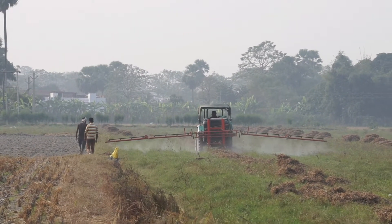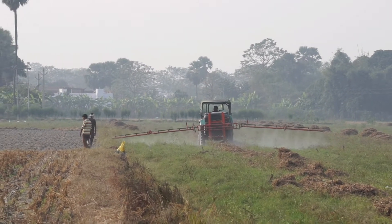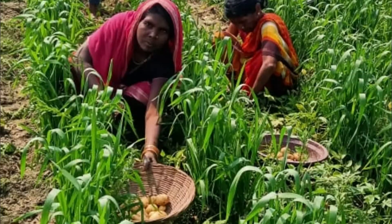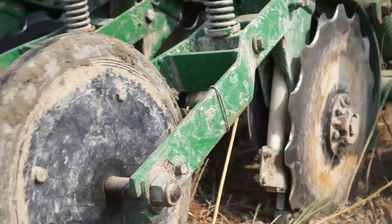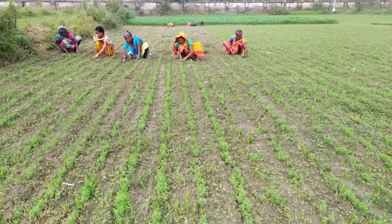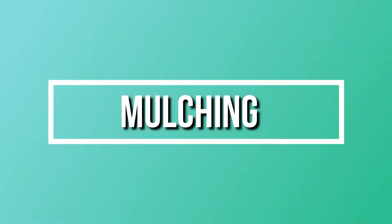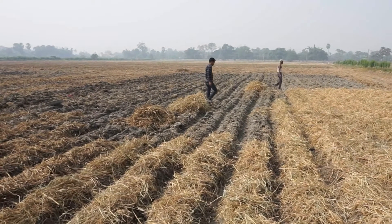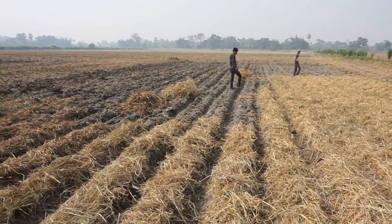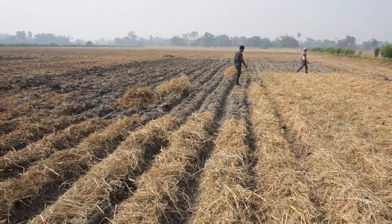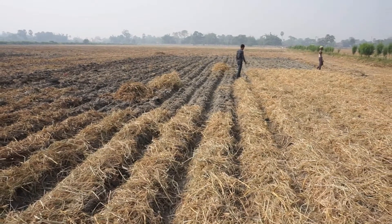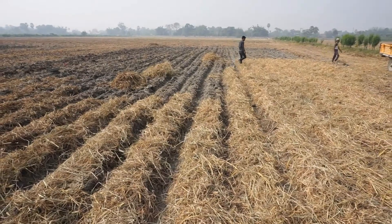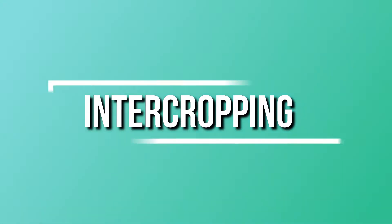Besides the chemical method, weeds can be managed with practices like mulching, intercropping, crop rotation, zero tillage, and manual weeding. Mulching is a process of covering the soil surface with organic or crop residues. It checks weed seed germination, moderates soil temperature and moisture, and reduces soil erosion.